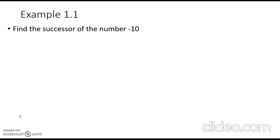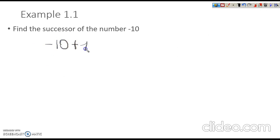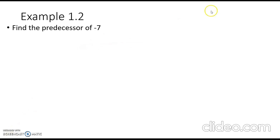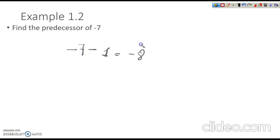Let's see one example: find the successor of the number minus 10. If we have to find the successor, we add 1 to that number. So the successor of minus 10 will be minus 10 plus 1, which is minus 9. And for the predecessor, we subtract 1. So to find the predecessor of minus 7, we do minus 7 minus 1, which will be minus 8. Simple — I hope you understand this.